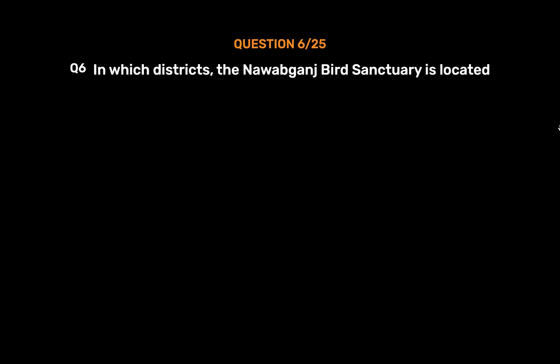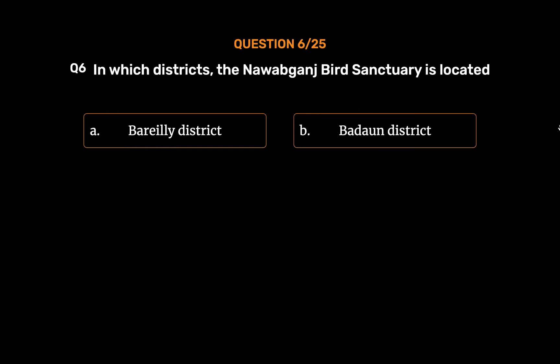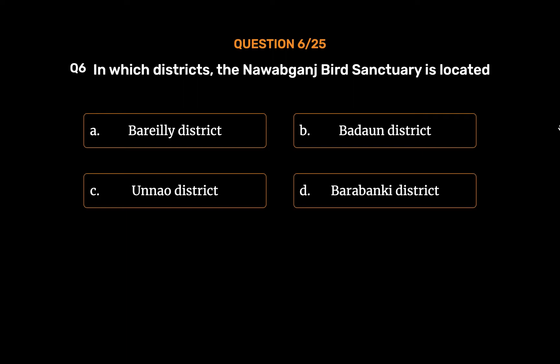Question No. 6: In which district is the Nawab Ganj Bird Sanctuary located? Option A: Bareilly District. Option B: Badayun District. Option C: Unnao District. Option D: Barabanki District. The correct answer is Option C: Unnao District.